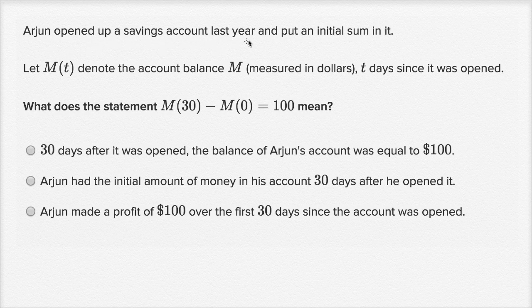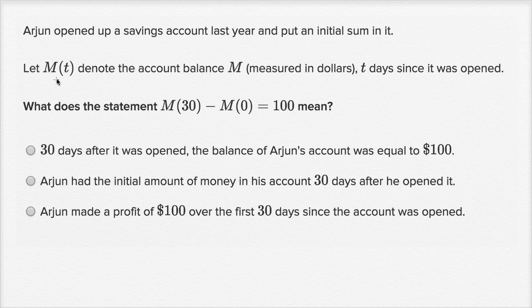Arjun opened up a savings account last year and put an initial sum in it. Let M(t) denote the account balance M, measured in dollars, t days since it was opened. What does the statement M(30) minus M(0) equaling 100 mean?